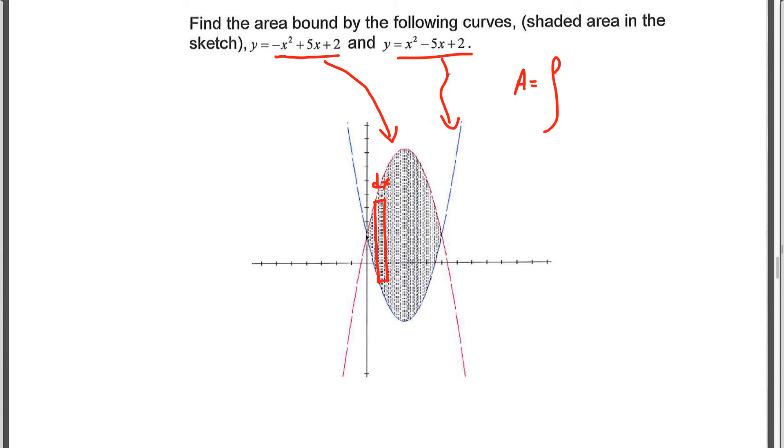And so immediately, we can write our integral for area. We're going to evaluate between the x values, which are from 0 up to 5. And then we take our top function, -x² + 5x + 2, and subtract our bottom function, x² - 5x + 2. And we'll put some big square brackets there, and put our dx outside.